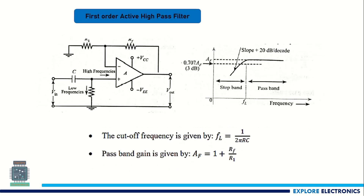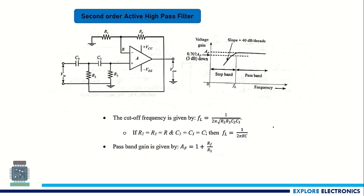For the first-order active high-pass filter, we have a high-pass filter component combined with an amplifier. The slope here is plus 20 dB per decade — the amplitude increases after reaching the cutoff frequency. The cutoff frequency equals 1 divided by 2πRC. In the second-order high-pass filter, the slope increases to 40 dB per decade. The cutoff frequency for the second-order case is 1 divided by 2π times the square root of R2·R3·C2·C3, which reduces to 1 divided by 2πRC when all components are equal.